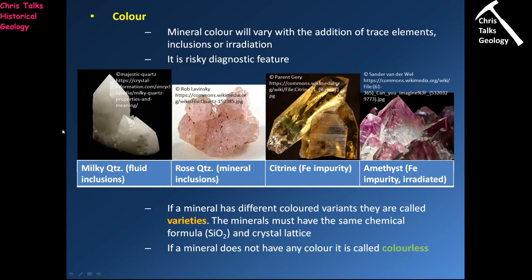Rose quartz results from an inclusion of a titanium mineral inside the quartz crystal, giving it a distinct pink colour. Citrine has a distinct yellow colour due to an iron impurity in the quartz crystal. Amethyst is also due to an iron impurity, but that impurity has likely been irradiated, causing it to turn purple. Very small changes in chemical composition and in the environment in which the crystal forms can result in rather significant changes in colour.